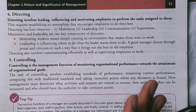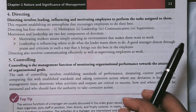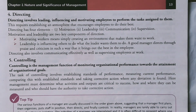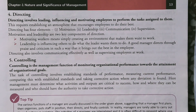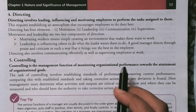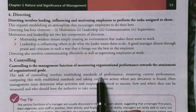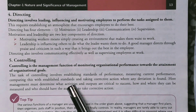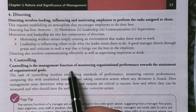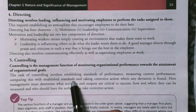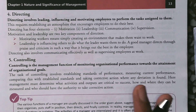Next is controlling, a very important task. For example, if you are preparing for an exam and your target marks are 90, but you get 85 — what do you do now? Controlling is the management function of monitoring organizational performance towards the attainment of organization goals. The task of controlling involves establishing standards of performance, measuring current performance, comparing it with the established standard, and taking corrective action wherever any deviation is found. So the five functions are planning, organizing, staffing, directing, and controlling, and for today this much is enough.